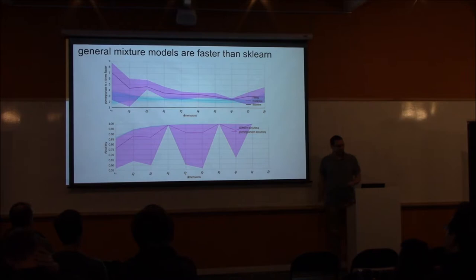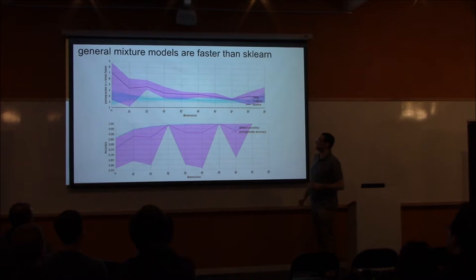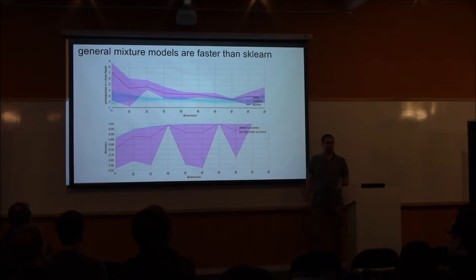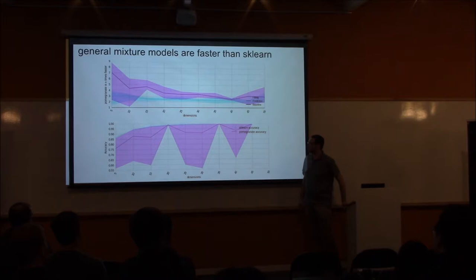General mixture models in pomegranate are faster than scikit-learn. Looking at multivariate Gaussian distributions, the y-axis shows how many times faster pomegranate is than scikit-learn. It seems like as we increase the number of dimensions, we go from around three times faster to about twice as fast in fitting. As for accuracy, it is a bit ill-defined for unsupervised problems like this — these giant spikes are caused by some initialization issues that pomegranate has, which are simply fixed. So hopefully you won't see these giant spikes while still getting competitive accuracy.